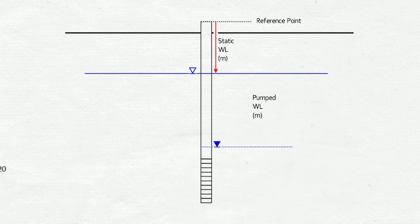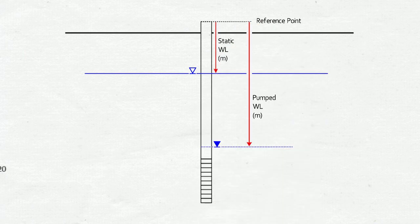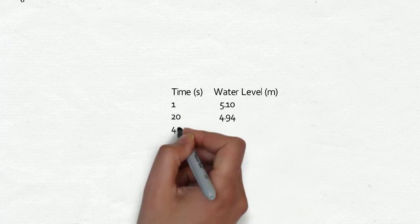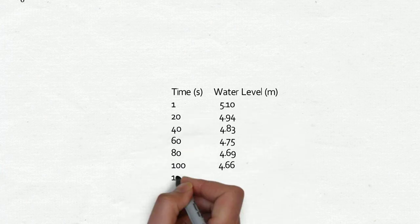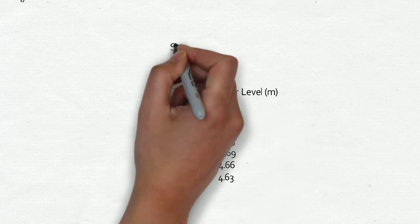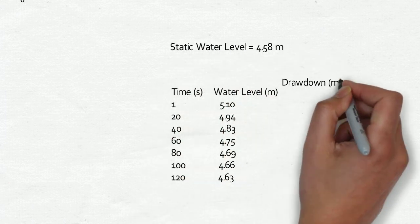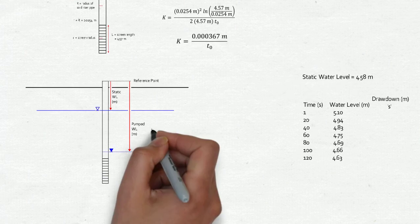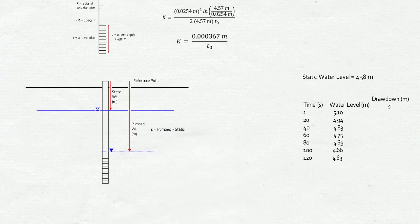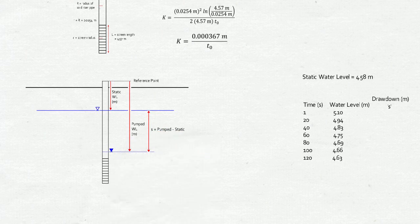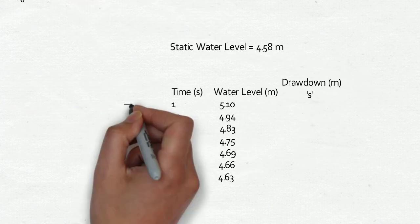The well was pumped, and additional water levels were measured as the well recovered. The resulting table shows the time after pumping stopped and the water level at each time. Start by creating a third column called drawdown. The symbol for drawdown is S. Drawdown is the difference between the static water level and the level in the well after pumping or baling.